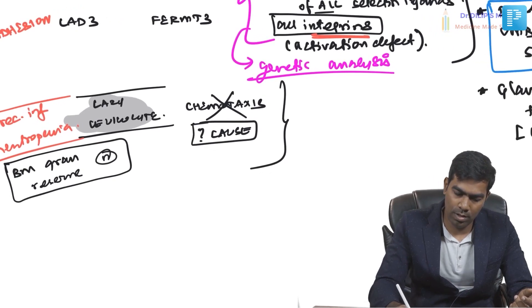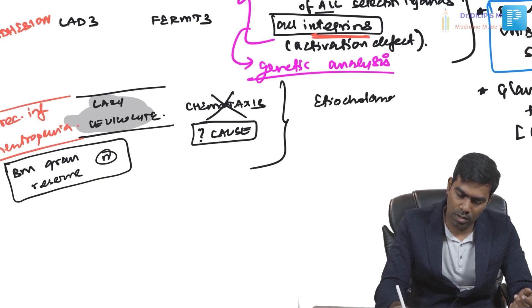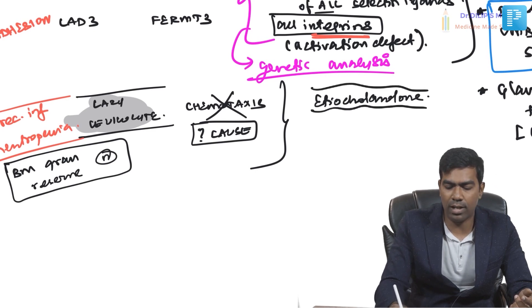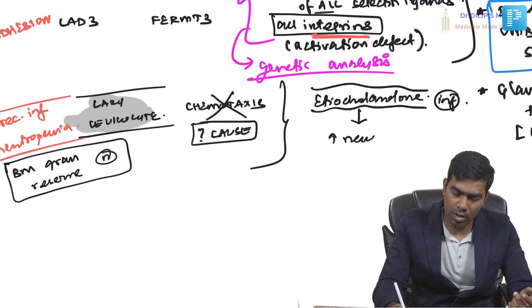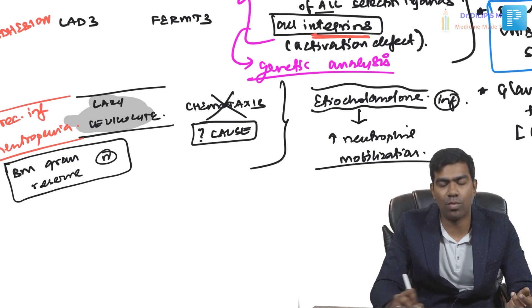Lazy Leukocyte Syndrome is diagnosed using the etiocholanolone test. Injection of etiocholanolone normally results in increased neutrophil mobilization from the bone marrow into the blood. However, if neutrophil levels remain low even after injection, it confirms a chemotaxis defect and diagnoses Lazy Leukocyte Syndrome. This is a potentially important exam question.